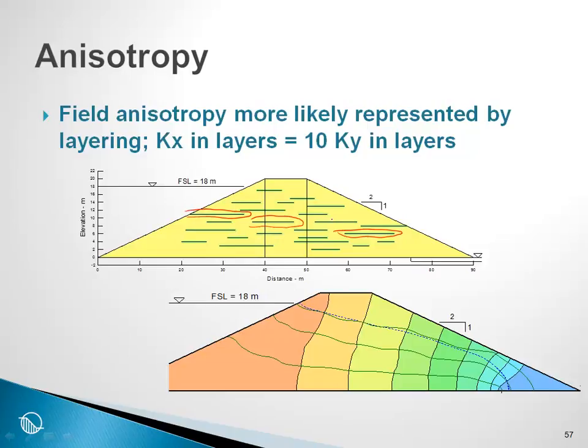I have made the x conductivity in the layers is 10 times greater than the y conductivity in the layers. In other words, there's a lot of anisotropy in the layers. And in spite of all of these layers, with the large amount of anisotropy in each of the layers, none of the layers are entirely connected.